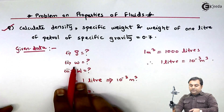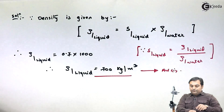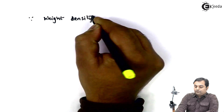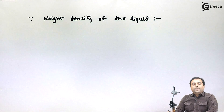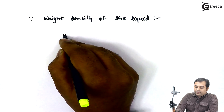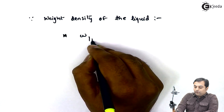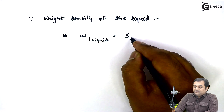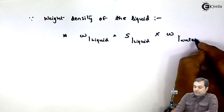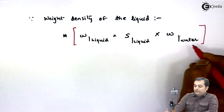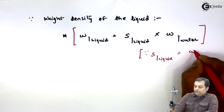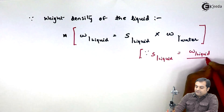Next, we have to calculate the weight density of the liquid. The weight density of the liquid can be calculated using the specific gravity relation. The weight density of the liquid, denoted by small w, equals the specific gravity of the liquid multiplied by the weight density of the standard liquid (water). This relation comes from: specific gravity of liquid equals weight density of liquid divided by weight density of water.